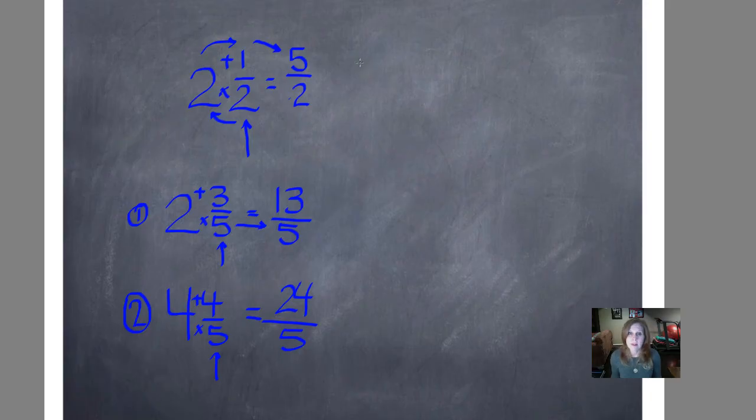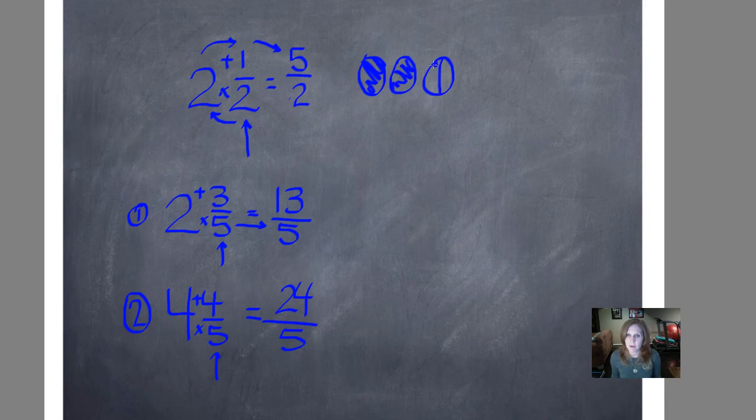Two and one-half is essentially two wholes and one-half of a whole. So we can color these in, and then this would only be a half of this whole that we would color in. So we have two and a half. One plus one is two, and then a half is two and a half.